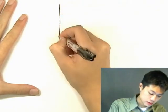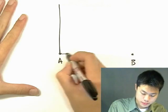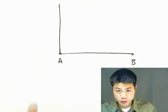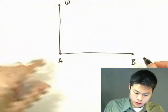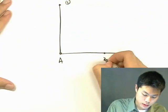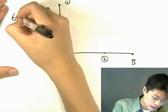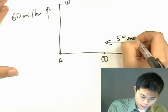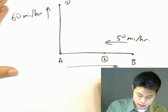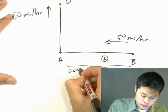Let's draw a picture — let's make it big. You have city A here, you have city B here. We have car one moving north from city A — let's say it's here. Car two is somewhere in between A and B. Car one is moving north at 60 miles per hour, and car two is moving west at 50 miles per hour. This distance between A and B is 200 miles.